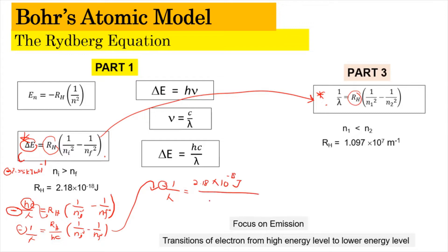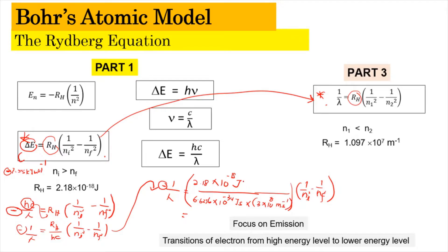The negative sign is still present. H refers to Planck's constant: 6.6256 times 10 to the power of negative 34 joules per second. And c is the speed of light: 3 times 10 to the power of 8 meters per second. When you calculate RH over hc, joules cancel with joules, seconds cancel with per second, and you're left with per meter. The calculated value is 1.097 times 10 to the power of 7 per meter.